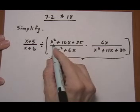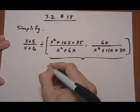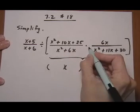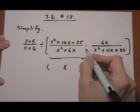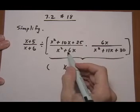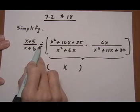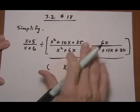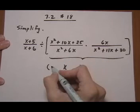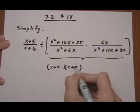If I have x squared plus 10x plus 25, I'm going to want to factor it. These are being multiplied, so we go right to the factoring and canceling steps. After that we're going to change this division to multiply and flip. So first we're going to factor here: x plus 5, x plus 5.